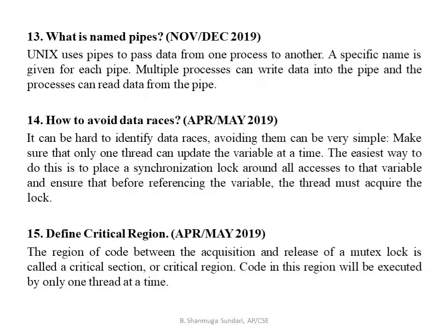What are named pipes? Named pipes are used to pass data from one process to another. Data races can be avoided by setting a mutex lock — only one thread at a time can access the data. Define critical region: the region of code between the acquisition and release of a mutex lock is called the critical region or critical section. Code in this region will be executed by only one thread at a time.